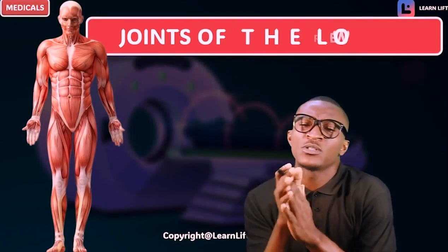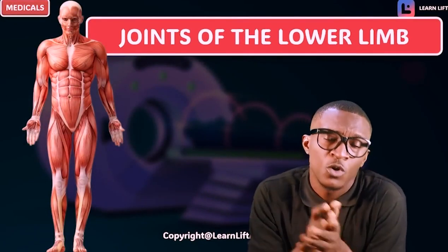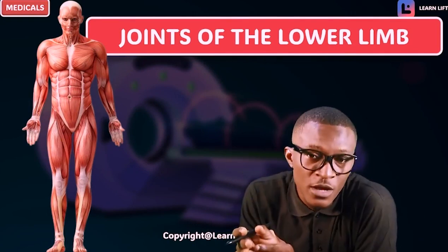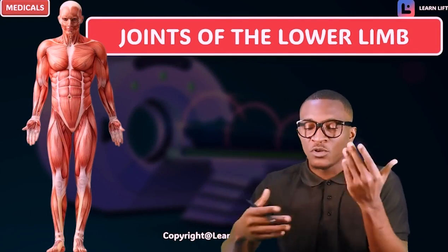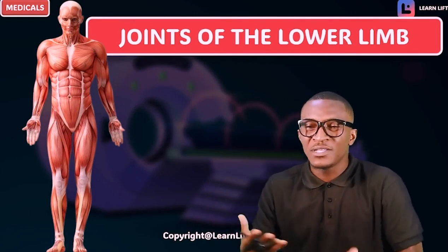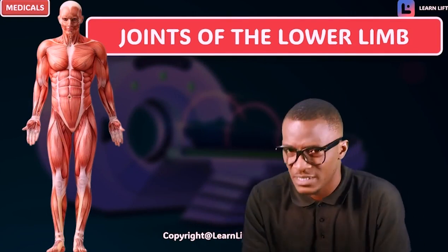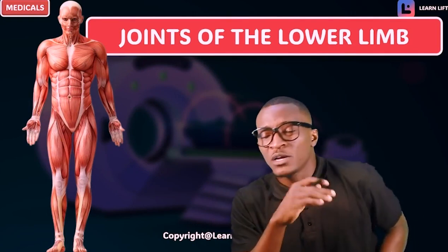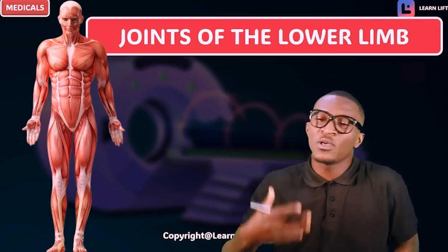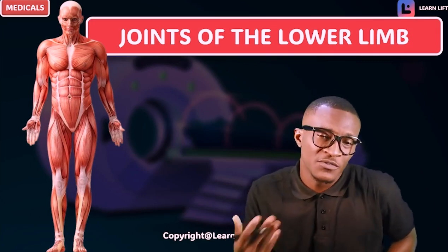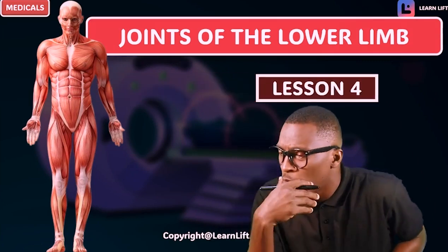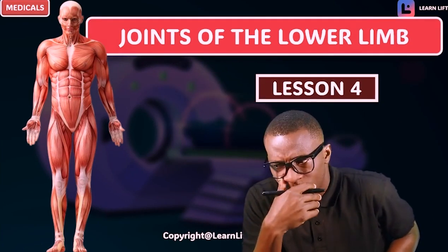Hello guys, let's now talk about the joints of the lower limb. Remember that we are still in the overview. What overview does is that it gives you the basis, so that you should also know where we are going to. It gives you the basis. Overview — this will be our word lesson.